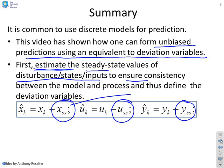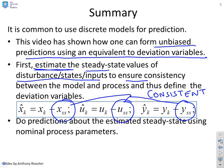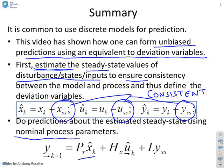These estimates have to be consistent. So your predictions will only be unbiased if the estimates for x_ss, u_ss and y_ss are consistent. Once you've done that, you do your predictions around the estimated steady state using nominal process parameters. And you don't need the disturbance term anymore. So you'll see my prediction is based upon just the deviation variable for x, the deviation variable for u, and I add on the steady state value for y to get my predictions to the actual value that I need.